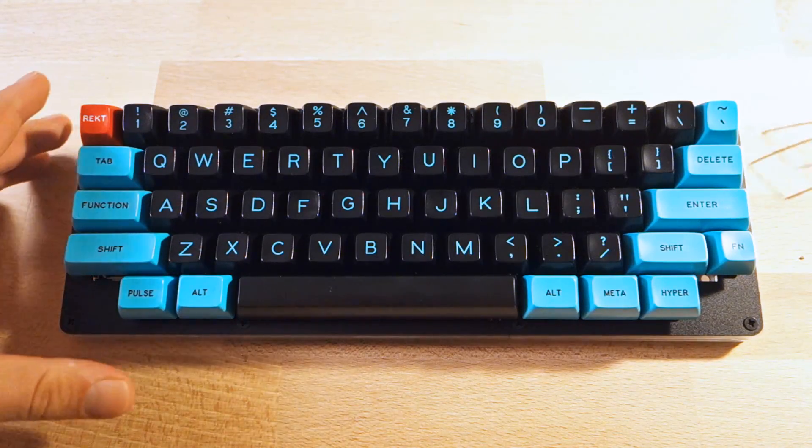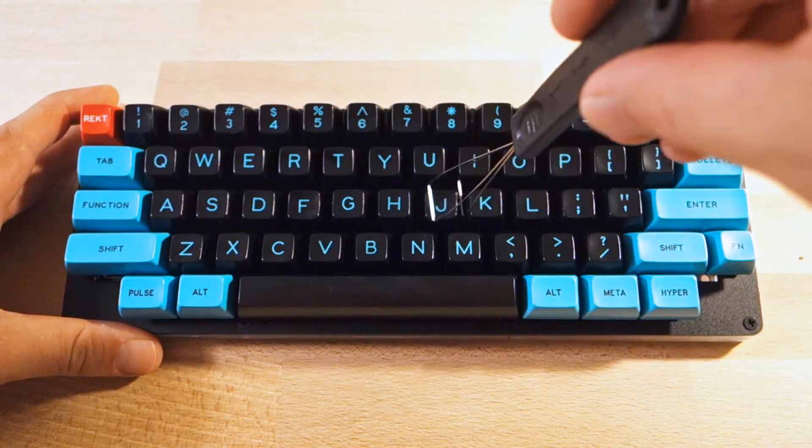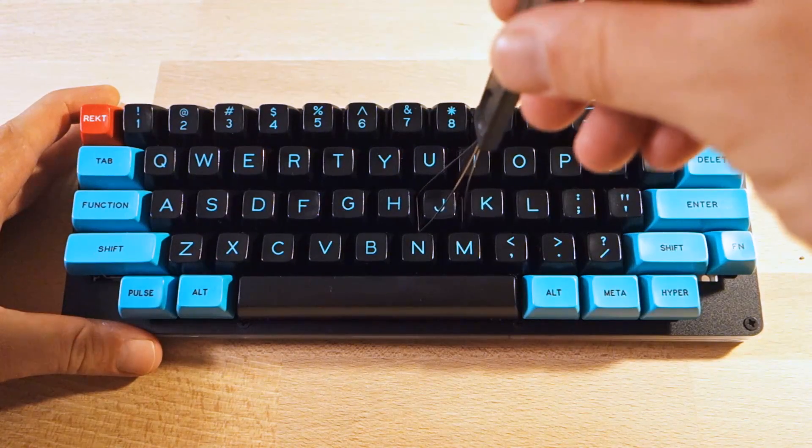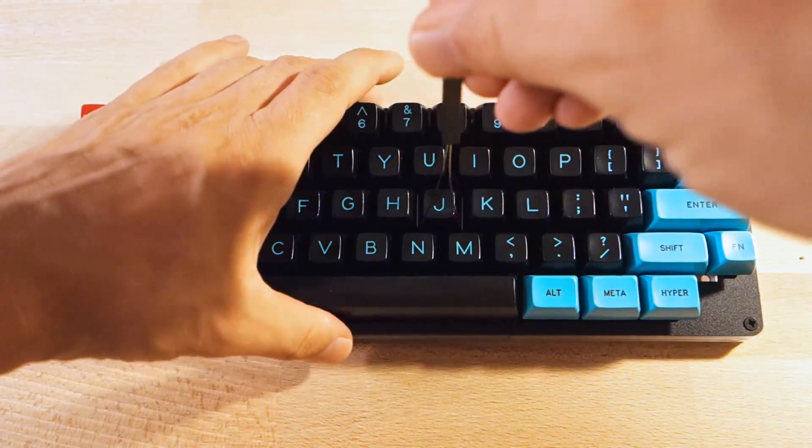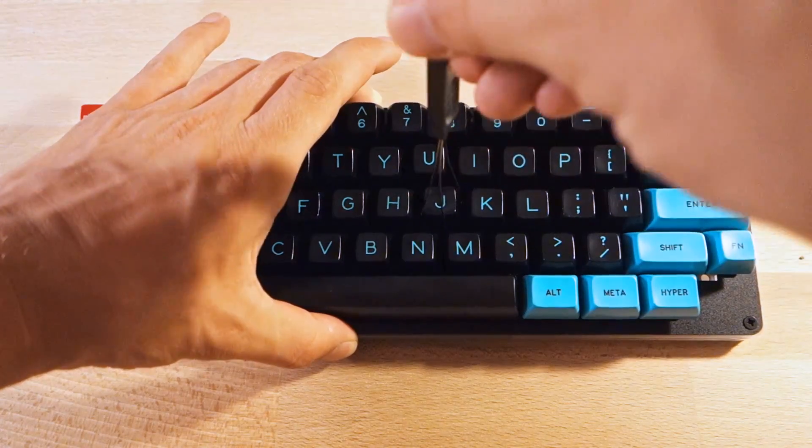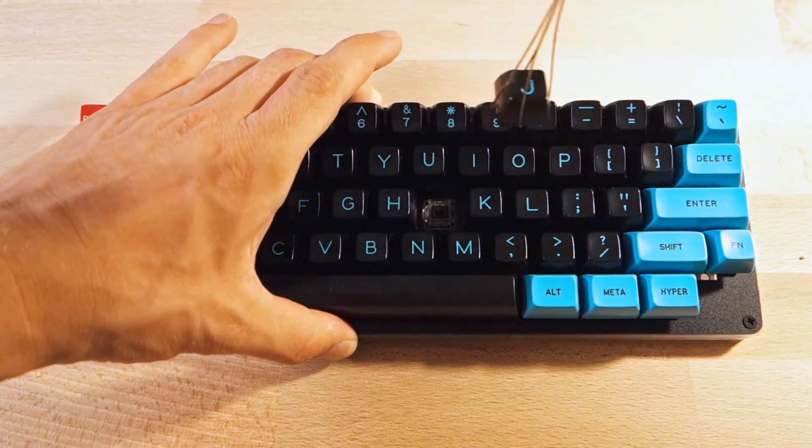So here I assemble the full board and I'll just try to pull one of the keys out with this standard keycap puller. As you can see, the switch doesn't really move, only the cap moves and detaches just fine.